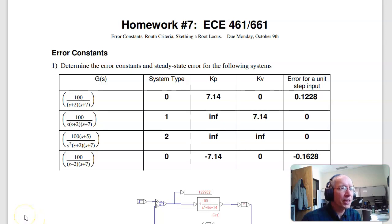Here are solutions to homework set number 7 for ECE 461/661. This homework looks at error constants, Routh criteria, and sketching a root locus.